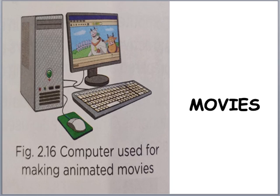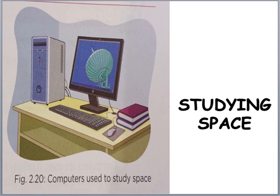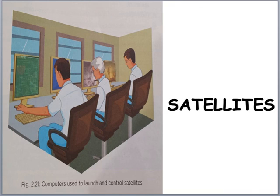Computers are used for making animated movies — jo bhi animated ya cartoon movies hoti hain, uske liye bhi computers aajkal bahut popularly use hote hain. Computers are also used to study space — satellites aur weather forecasting, in sab cheezon ke liye bhi use mein aata hai. Satellites — computers are used to launch and control satellites. Jo scientists hote hain jo satellites ko launch karte hain, with the help of computers woh satellite ka control — kahan pe kya karna hai, sab kuch computers ke through manage karte hain.